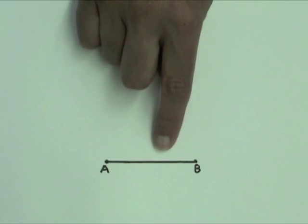In this video, we will use a compass and a straightedge to construct a square. Line segment AB represents one side of the square.